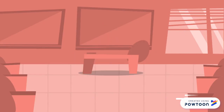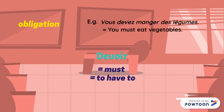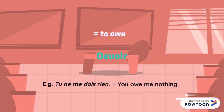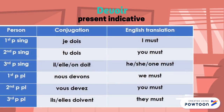Another modal verb is devoir. It generally means 'must, to have to.' It expresses obligation — for instance, 'vous devez manger des légumes' (you must eat vegetables). It can also mean 'to owe,' for example, 'tu ne me dois rien' (you owe me nothing). The conjugation of devoir at the present indicative is: je dois, tu dois, il/elle/on doit, nous devons, vous devez, ils/elles doivent.